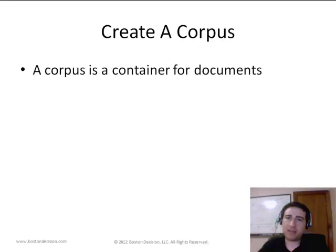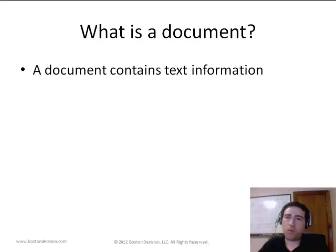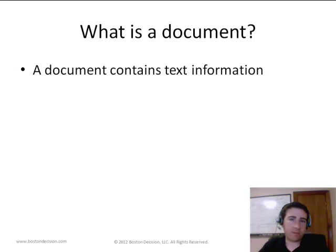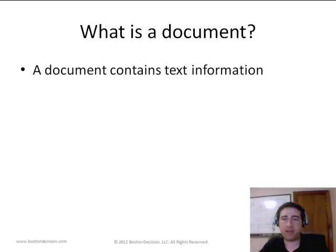The first step in a text mining engagement, once you get into the data, is to create what's known as a corpus. A corpus is simply a collection of documents, where each document contains some text-based information. In this case, a document is a file containing a speech, and a corpus is the collection of speeches — in this case, the directory with the candidate's name. We're going to have two corpuses: one for Romney and one for Obama.